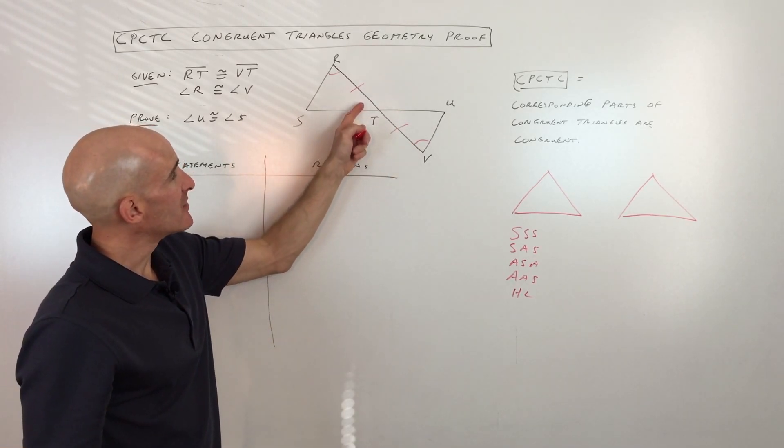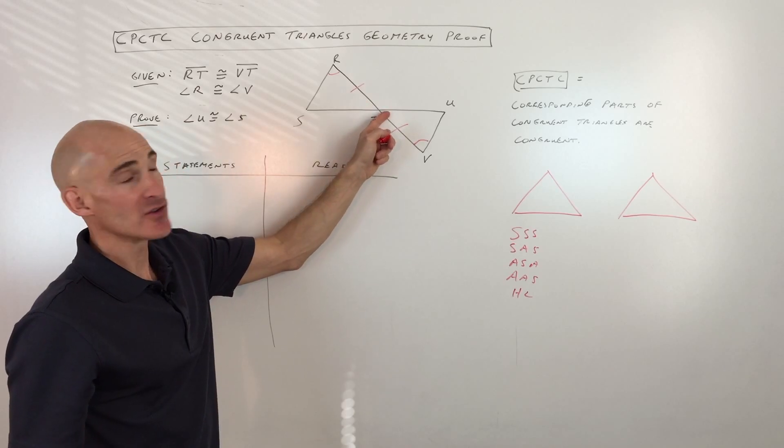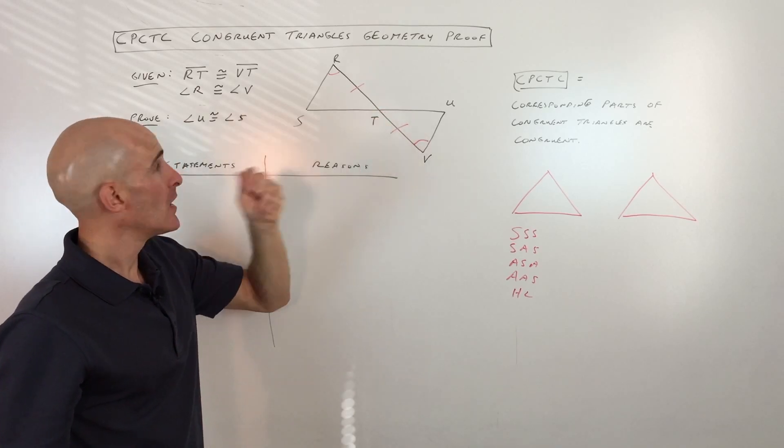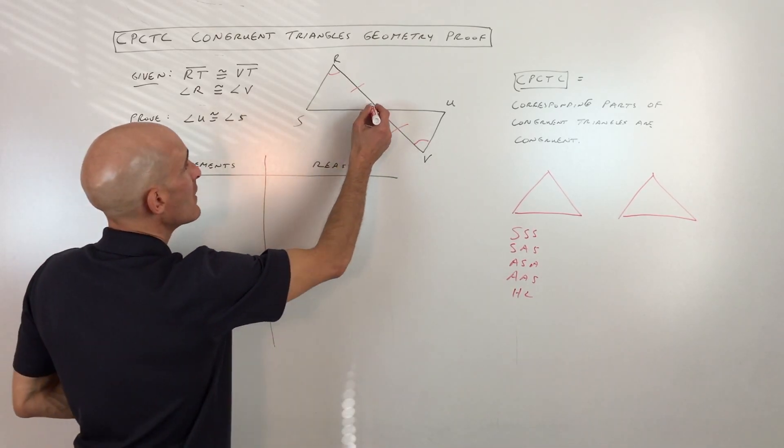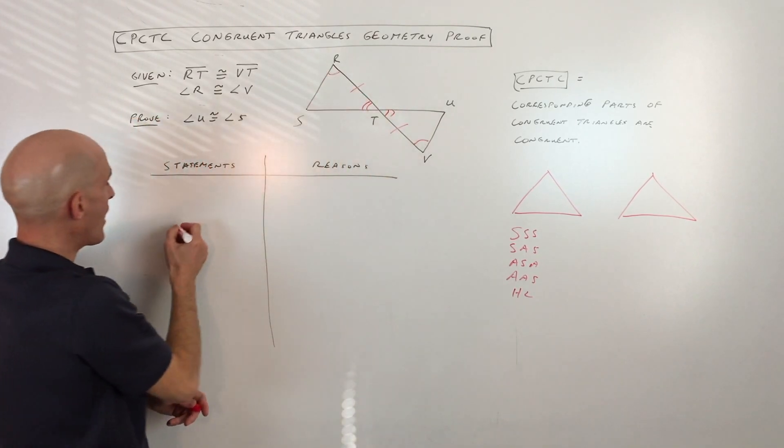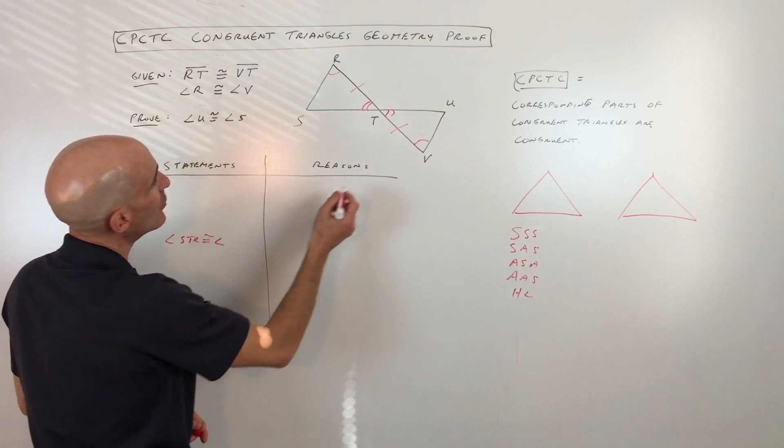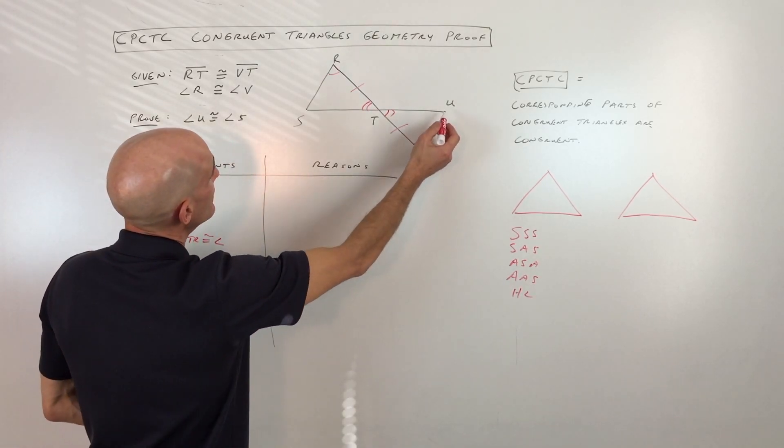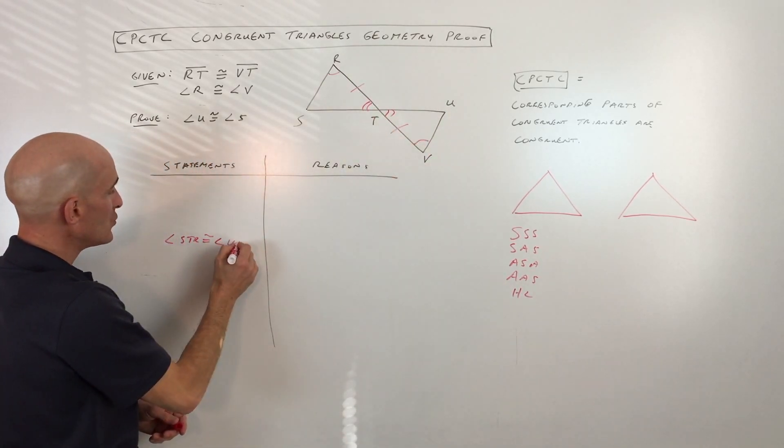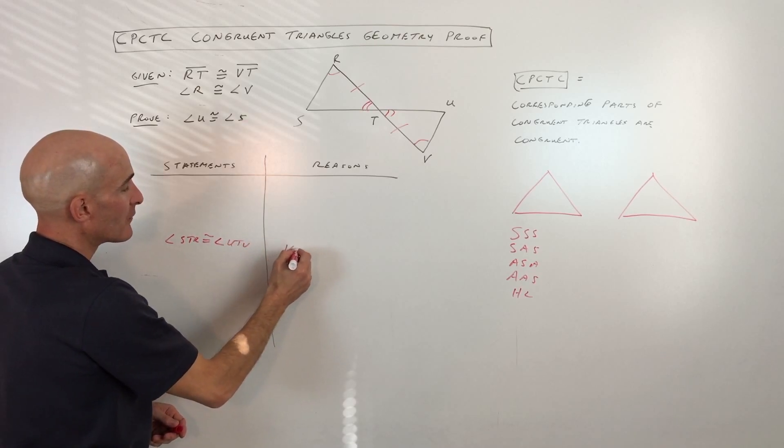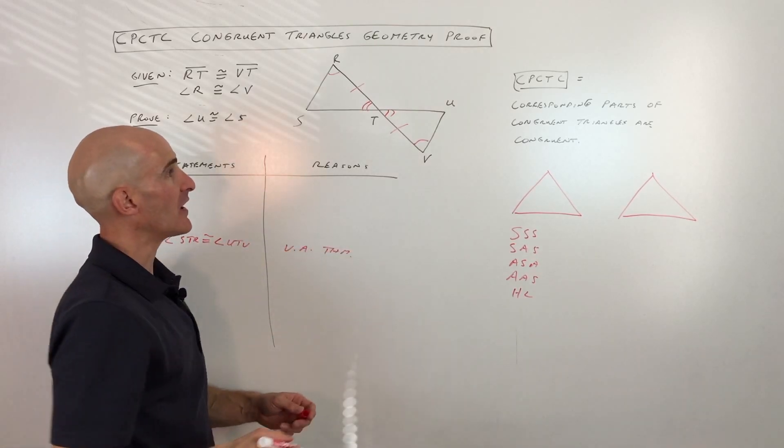Well, you can see here that these two angles are vertical angles. They're going to be congruent to one another. So that's going to be part of our proof. So we're going to go ahead and show that angle STR, put that down here, angle STR is congruent to angle, let's see, UTV, UTV. And the reason would be vertical angle theorem. Okay, I'm just abbreviating.